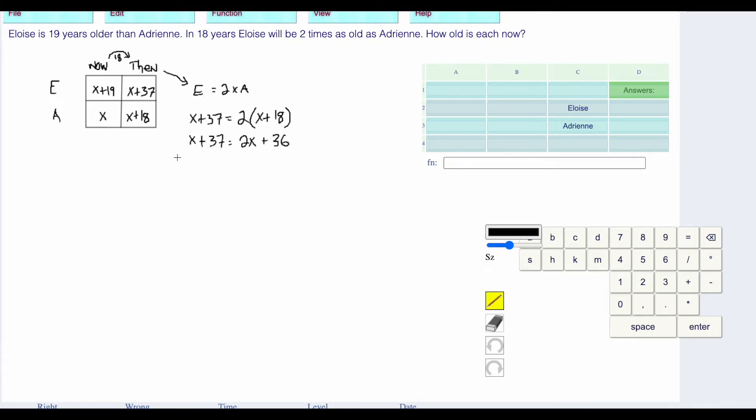I am going to subtract X from both sides. I'm also going to subtract the 36 from both sides. That'll give me 1 is equal to X.